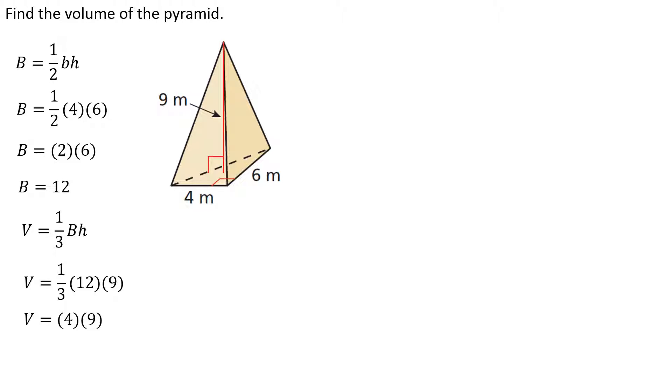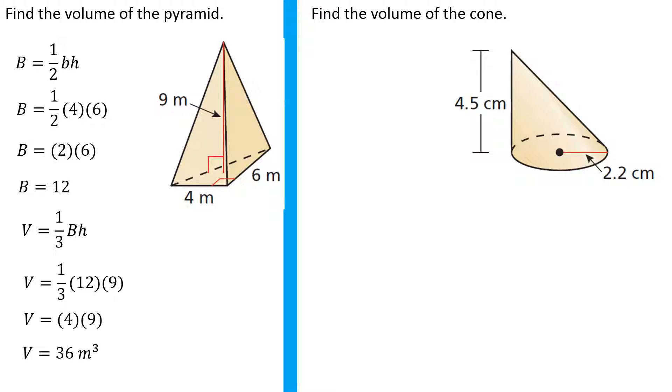Third of 12 is 4. 9 times 4 is 36. And again, when I get to a point where I've got a solution, I want to make sure that I put my label. And volume of course is cubic units, so we'll say it was cubic meters.